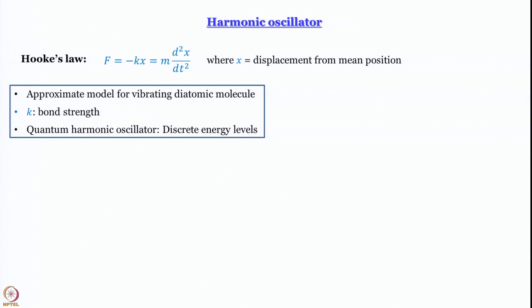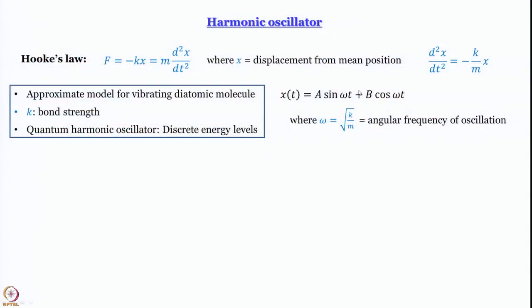Before going there, let us develop the treatment a little bit. First, let us simplify Hooke's law and rearrange to write d²x/dt² = -(k/m)x. This is a differential equation which we can try to solve. The trial solution we use is x(t) = A·sin(ωt) + B·cos(ωt) — again, the sin and cos terms are reminiscent of what you would get in circular motion.